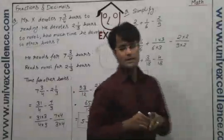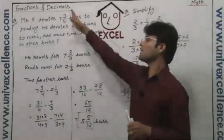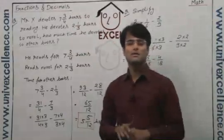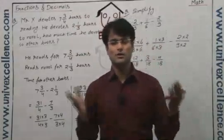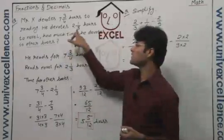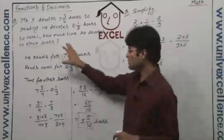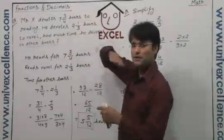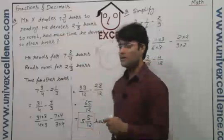So completely he reads 7 hours and ¾ more hours. This is the complete time he devotes to reading, and then he is devoting this much time to the novel. So for other books, we subtract the novel time from the total time, and we have the answer.